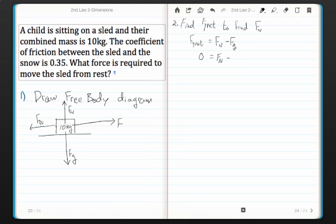Now, I'm going to make a little side note here, that F of g is equal to the mass times the gravity. F of g is mass times gravity, or acceleration due to gravity on Earth. So for us, that would be 9.8.